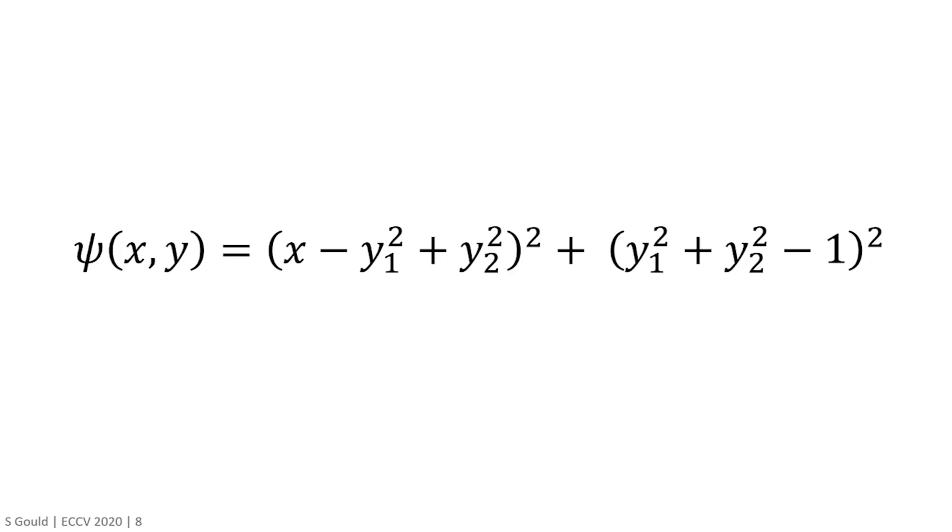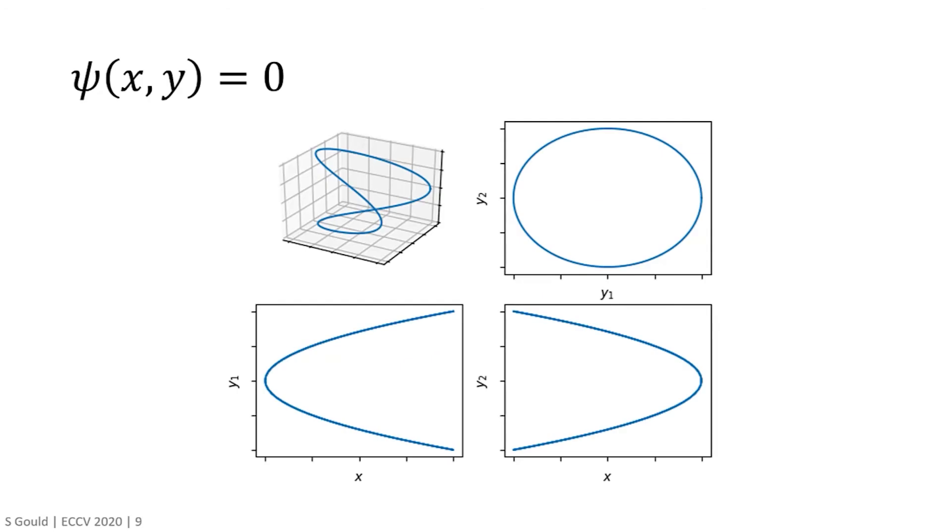Here I am showing the implicit equation that defines the solution space for the example just given. Note that we can think of this equation as defining a link between the input x and the output's y, as well as constraints on the output variables y. And on this slide, I am showing the zero level sets for the function psi, which shows the relationship between inputs and output variables.